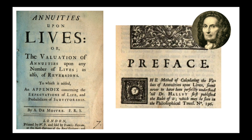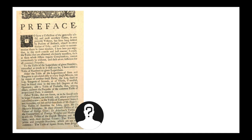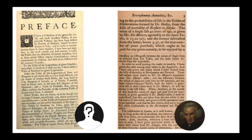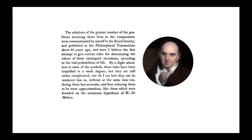When we look at the writings of James Dodson, he talks quite a lot about Abraham de Moivre and the tables he extended for annuities on lives. Richard Price himself also talked about Dr. Halley's observations and how they had been perfected by de Moivre.